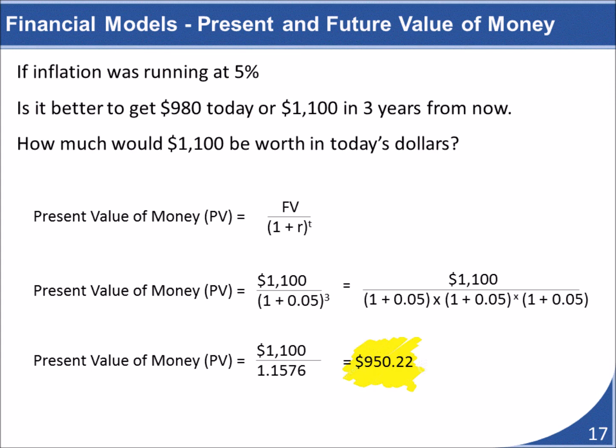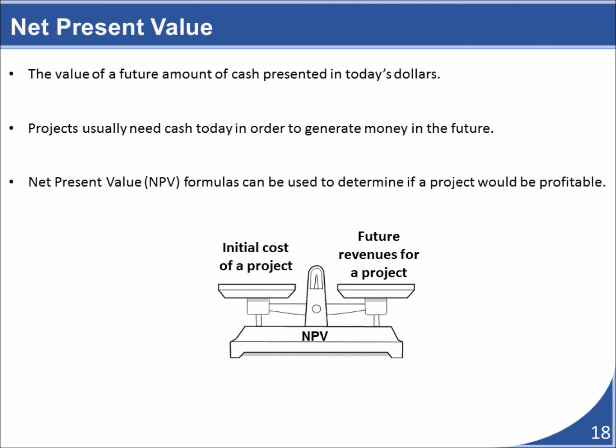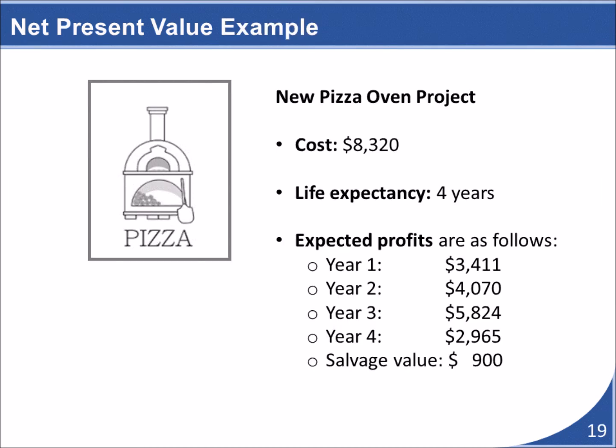Let's look at how this formula can help justify a project. The idea of translating future value of money into today's dollars is the foundation of net present value calculations. Most projects need cash today in order to generate money at some point in the future. Let's return to our pizza oven example: suppose we could buy a pizza oven for $8,320, but it would only last for four years, at which point we could sell it for about $900.